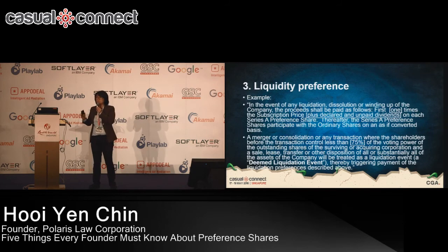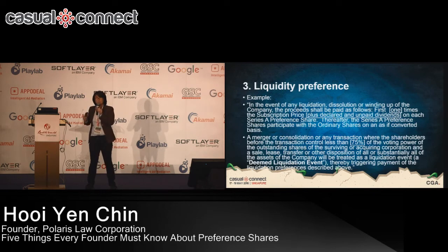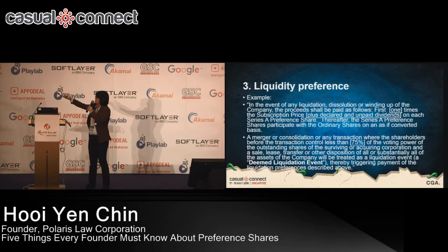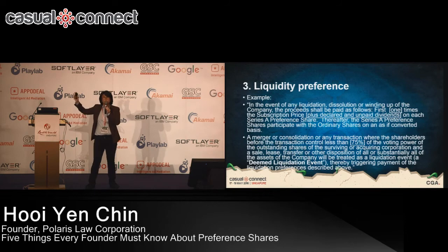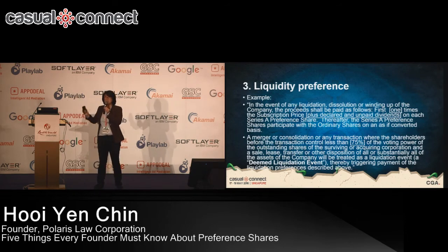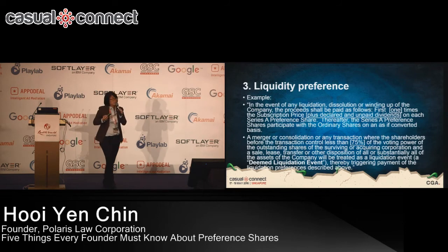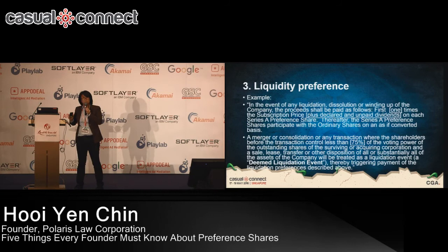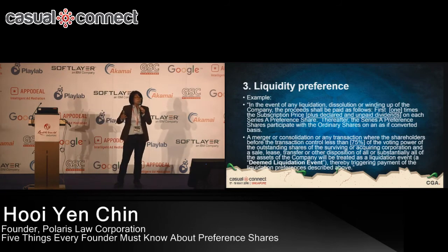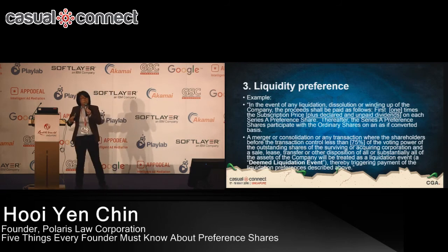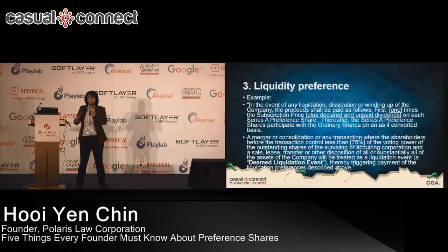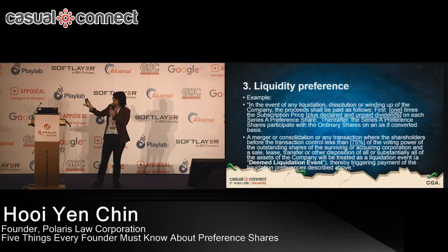To give a numerical example: say your company is sold for $10 million, and the investor put in $2 million. Under this clause, the investor first receives their $2 million back, leaving $8 million. The preference shareholder then participates with ordinary shareholders on a pro rata basis — getting a cut of that $8 million as well. This is called a participating preference and is very common.